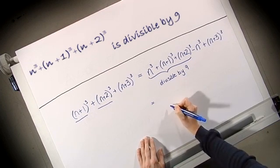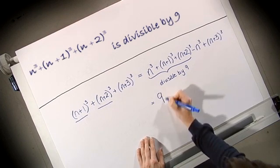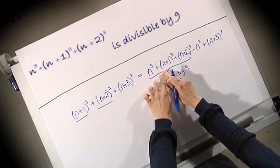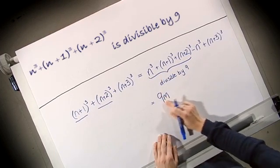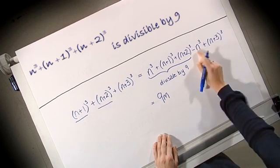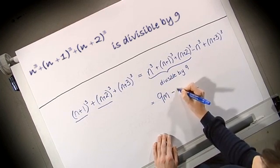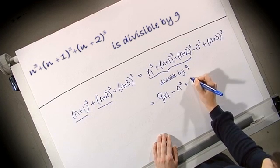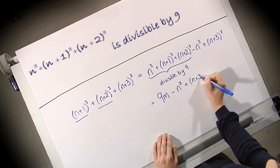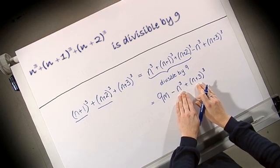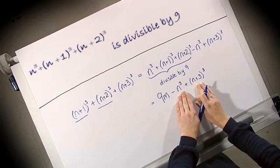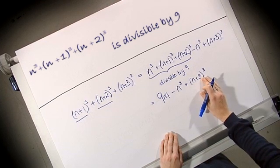I'm going to simplify that a little bit by just calling that 9m instead of writing those terms out again. So I show that it's got a factor of 9 within there. Then let's write our other two terms. Now all I need to do is show that these two terms are also divisible by 9. So let us multiply out the brackets and simplify.